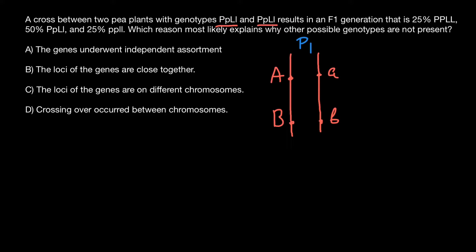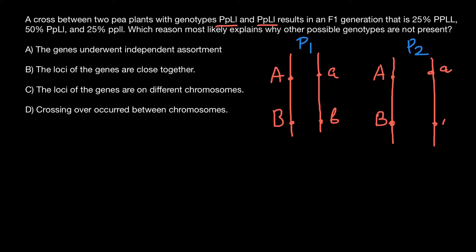Now let's also add the genotype of parent two. The genotype is going to be the same. We have the same homologous chromosomes, and on one we have dominant allele A and dominant allele B, and on the other, recessive allele A and recessive allele B.